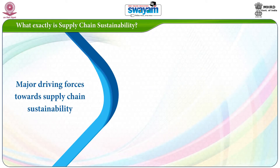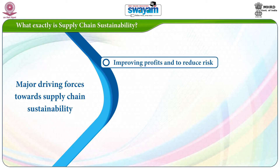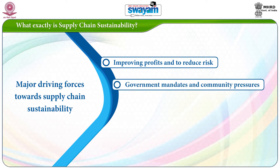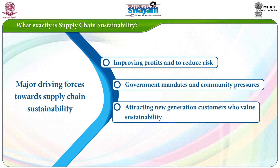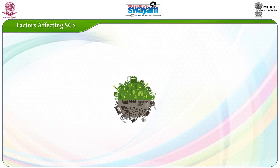The major driving forces towards supply chain sustainability are: first, improving profits and reducing risk; second, government mandates and community pressures; and finally, attracting new generation customers who value sustainability. Let's move on to the factors affecting supply chain sustainability.